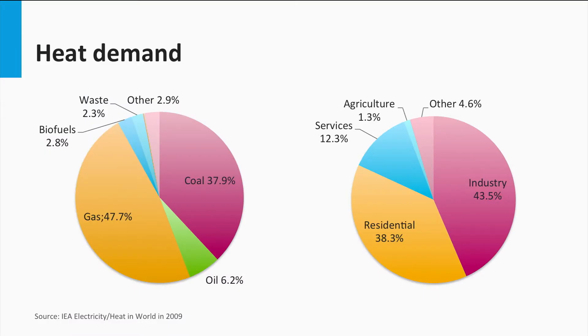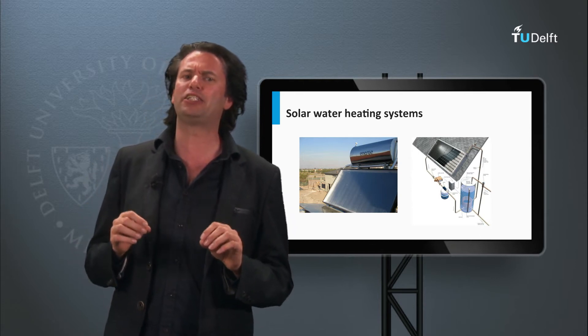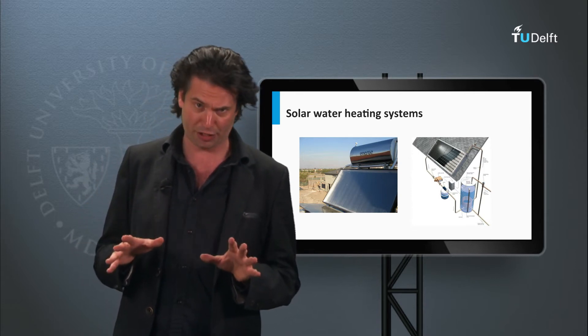As shown in the first graph, the supply of heat represents nearly half of the world's energy demand. Oil, coal and gas account for more than two-thirds of this demand. Most of the heat demand is accounted for the industrial and residential sectors. What we propose here is to cover at least part of this demand with solar energy.